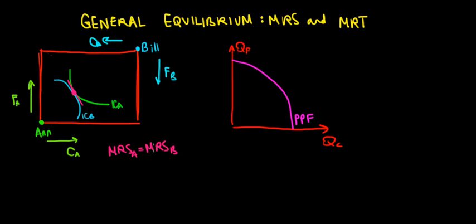But let's see how this relates to the marginal rate of transformation. The marginal rate of substitution of a consumer shows how much food, for instance, N is willing to trade for one more unit of clothing. Whereas the marginal rate of transformation — the slope of the PPF — is showing us how much food we must give up to produce one more unit of clothing.